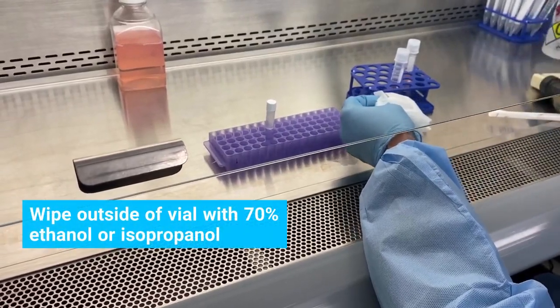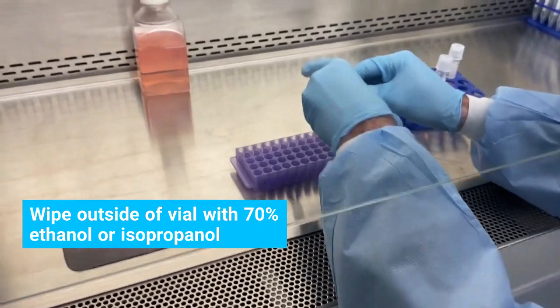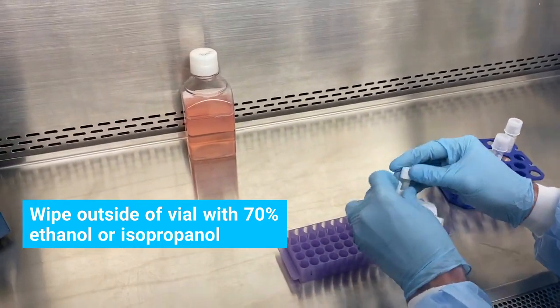Transfer vial to a biosafety cabinet and wipe the outside with 70% ethanol or isopropanol, focusing on the cap area.